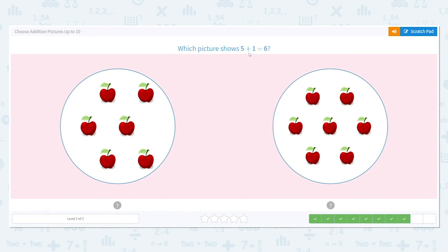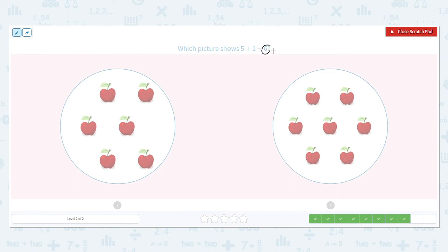Next one, which picture shows 5 plus 1 equals 6? What's the total number we're looking for? 6. So let's count this side. Go ahead and count. How many did you get on the left? Did you get 6? You should have. Let's try on the other side. How many are on the other side? Go ahead and count. Did you get 7? I hope so. 1, 2, 3, 4, 5, 6, 7. So which side is correct? Which shows 5 plus 1 equals 6? Yes, on the left.